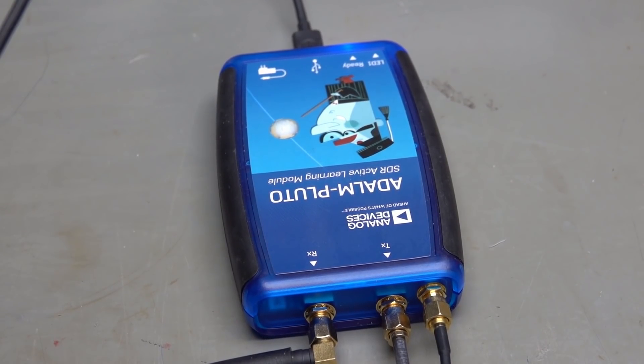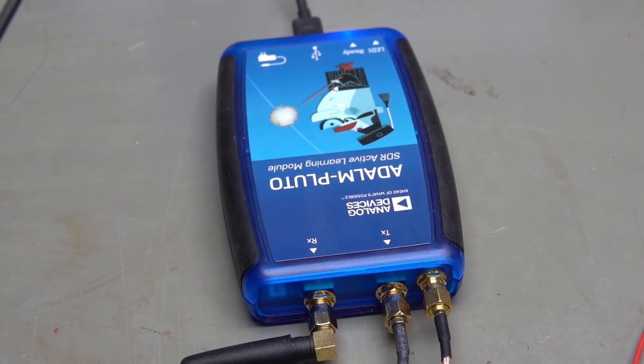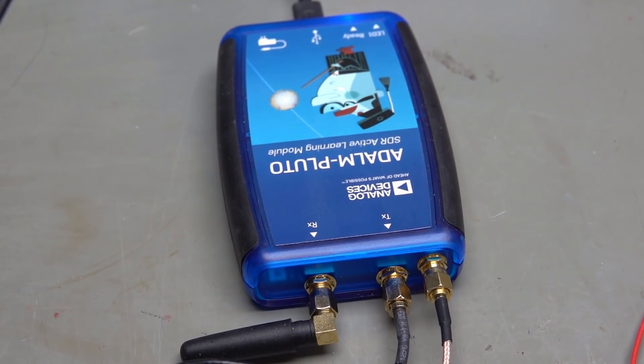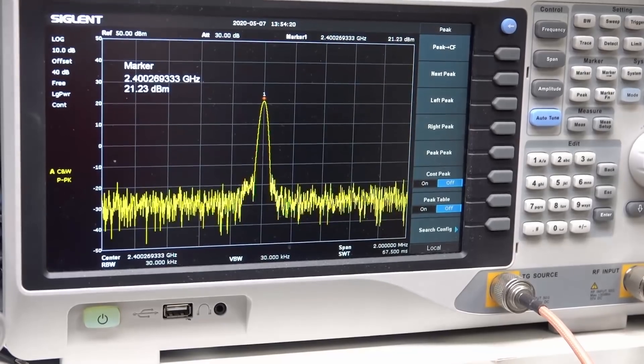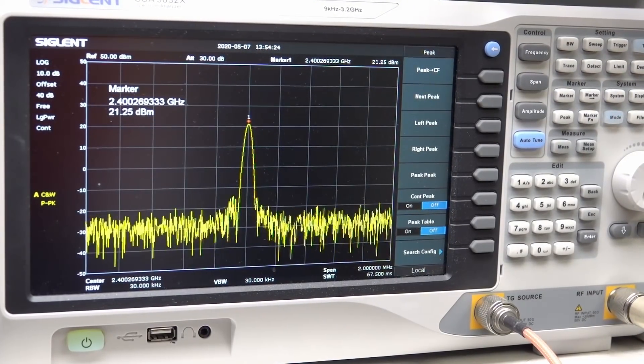As shown in the last video, I will use an Adalm Pluto SDR as a transmitter. So we first have to measure its output power. Then we can calculate the needed gain. Of course, we can use a spectrum analyzer to measure its output power. Not a cheap solution.